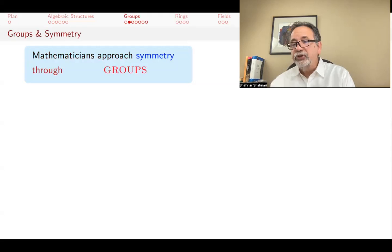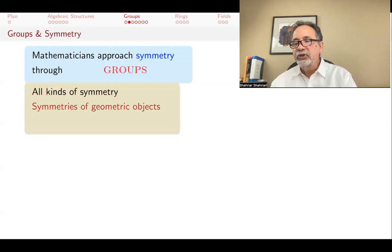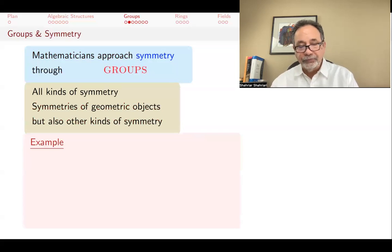We use groups to study symmetries. A mathematician's approach to symmetry is through groups. And by symmetry, we mean all kinds of symmetry. We mean symmetries of geometric objects, like symmetries of a square or a cube, but also symmetries of theories or symmetries in other places.